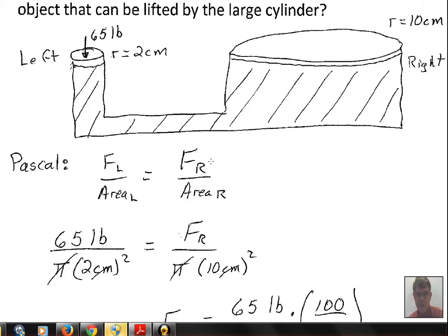Another comment would be there is a penalty to pay for all machines that multiply force. That penalty is that we must move the small piston a long distance and the large piston will move a small distance. We're pushing fluid down here with a small area - we have to push a certain volume to fill in the volume created by the piston moving up on the right side.